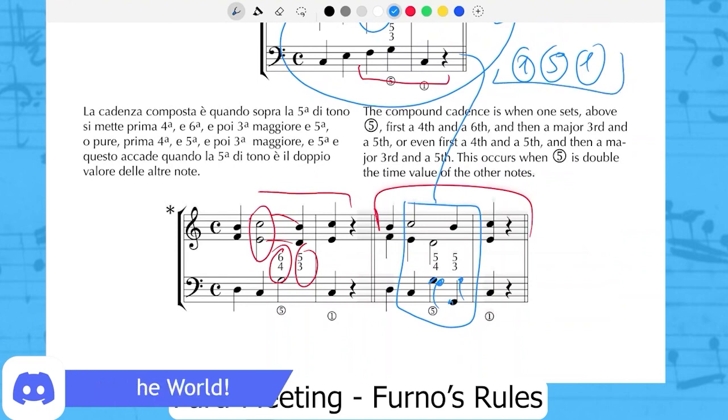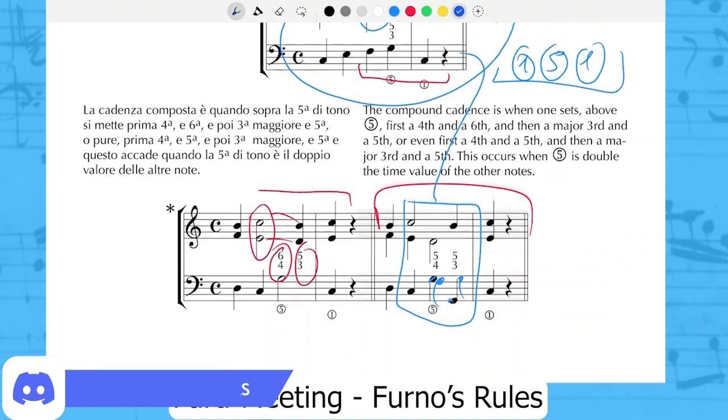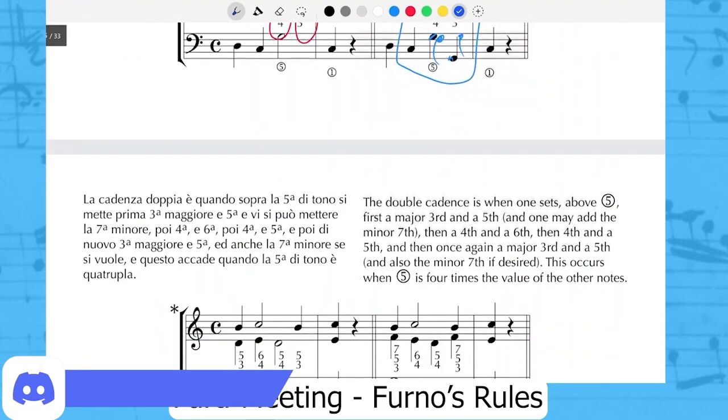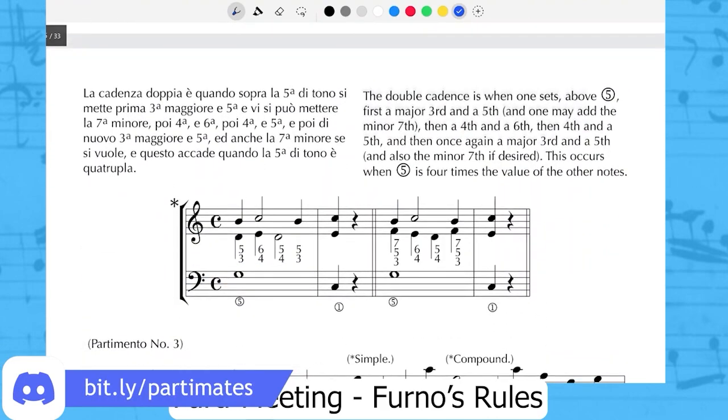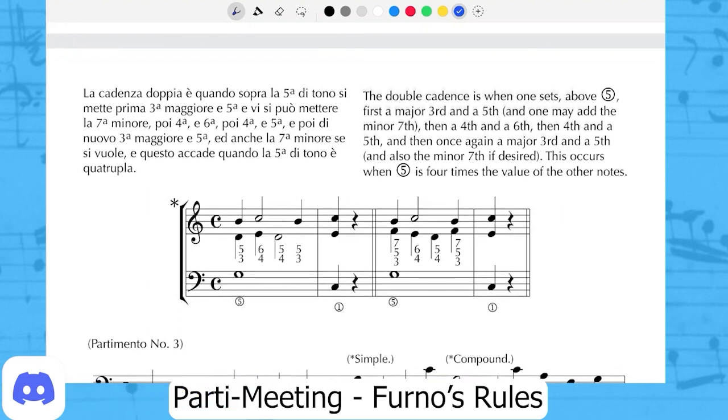The double cadence is when one sets above scale degree five first a major third and a fifth and one may add the minor seventh, then a fourth and a sixth, then fourth and a fifth, and then once again a major third and a fifth and also the minor seventh if desired. This occurs when scale degree five is four times the value of the other notes. Now I have a question for Luke: tell me, why the double cadence is called double?